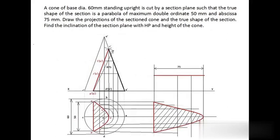The next question: a cone of base diameter 60 mm standing upright — resting on its base with the axis perpendicular to HP — is cut by a section plane such that the true shape of the section is a parabola of maximum double ordinate 50 mm and abscissa 75 mm. Draw the projections of the sectioned cone and true shape of the section, and also find the inclination of the section plane with HP and the height of the cone. Note that the height of the cone is not given — you are asked to find it.